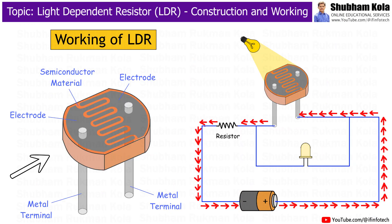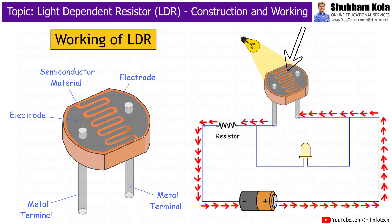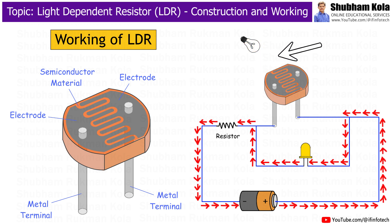In this video, we are going to learn about the construction and working of LDR, i.e. light-dependent resistor, which is a type of variable resistor whose resistance changes based on the intensity of light falling on it.